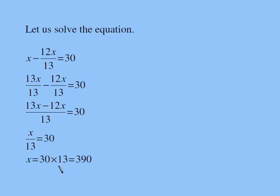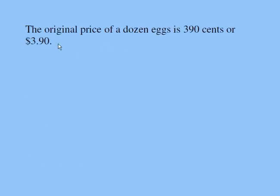Remember, in our assumption, we assumed x was in cents, so my answer is also in cents: 390 cents. The question asks for the original price of a dozen eggs, which we assumed as x, and x turns out to be 390 cents. So the original price of a dozen eggs is 390 cents or $3.90. That's my final answer.